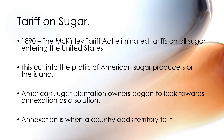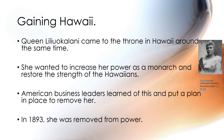This cut into the profits of American sugar producers on the Hawaiian islands, meaning that Americans would get sugar cheaper from other locations around the world. So American sugar plantation owners began to look towards annexation as a solution. Annexation is when a country adds territory to it — for example, the United States adding Hawaii. Queen Liliuokalani came to the throne in Hawaii around the same time, wanting to increase her power as a monarch and restore the strength of the Hawaiians. American business leaders learned of this and put a plan in place to remove her from power, and in 1893 she was removed.